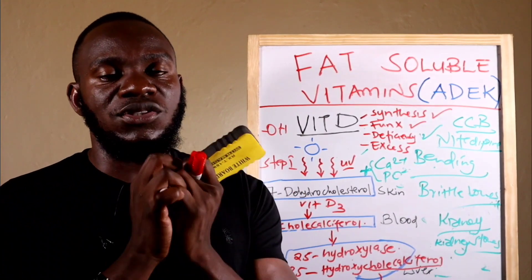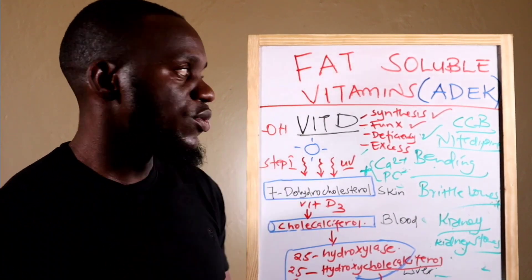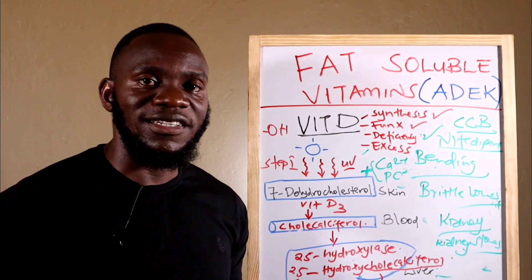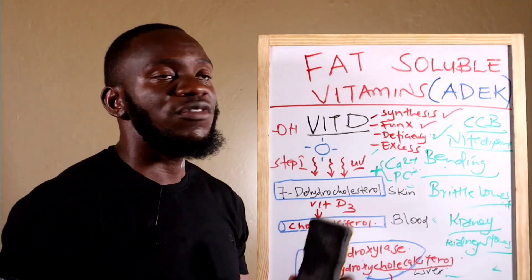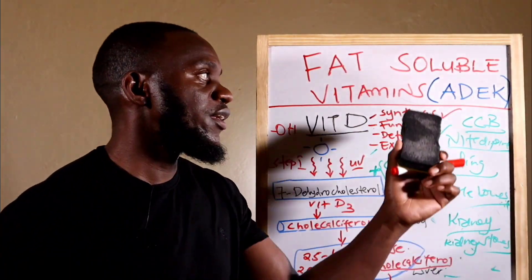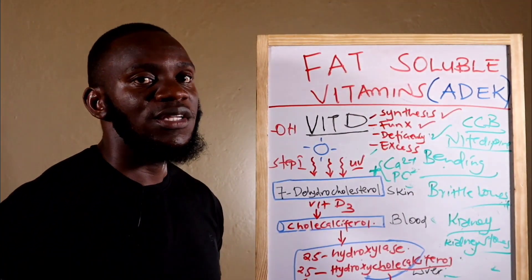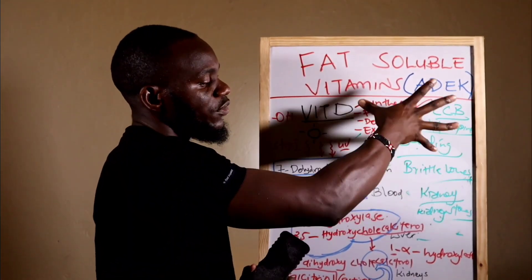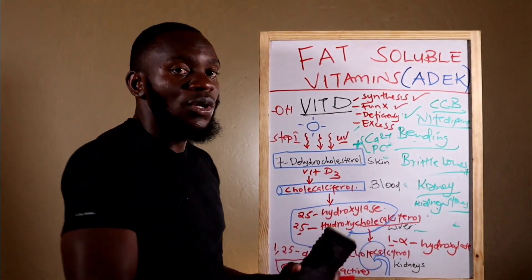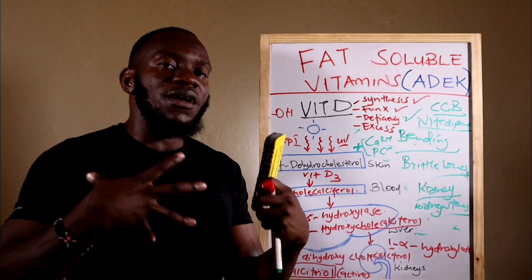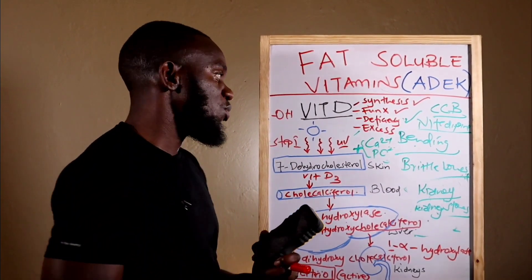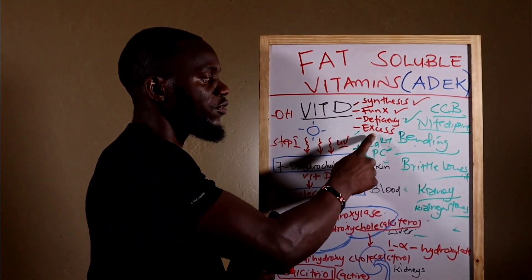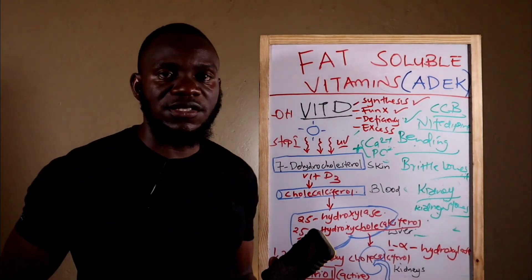That concludes our coverage of vitamin D and summarizes all fat-soluble vitamins: A, D, E, and K. We covered vitamin D's synthesis pathway, dietary sources, deficiency conditions (rickets, brittle bones), and the dangers of excess vitamin D.